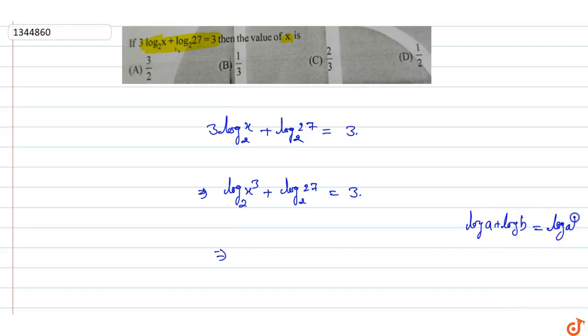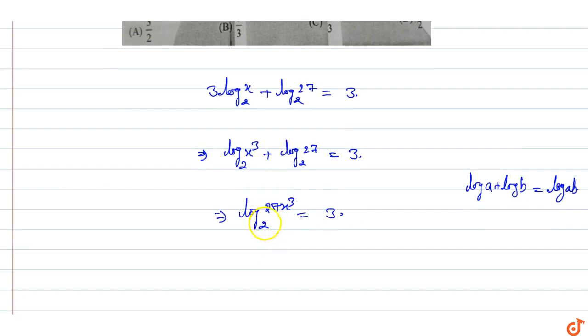So this will become log of x cube times 27 base 2 is equal to 3. The same thing is going on, log x cube times 27 base 2 is equal to 3.